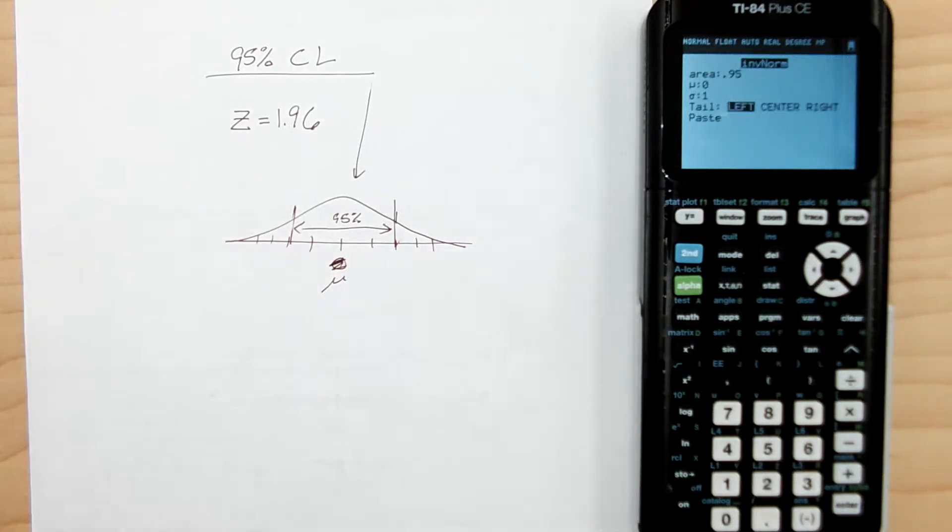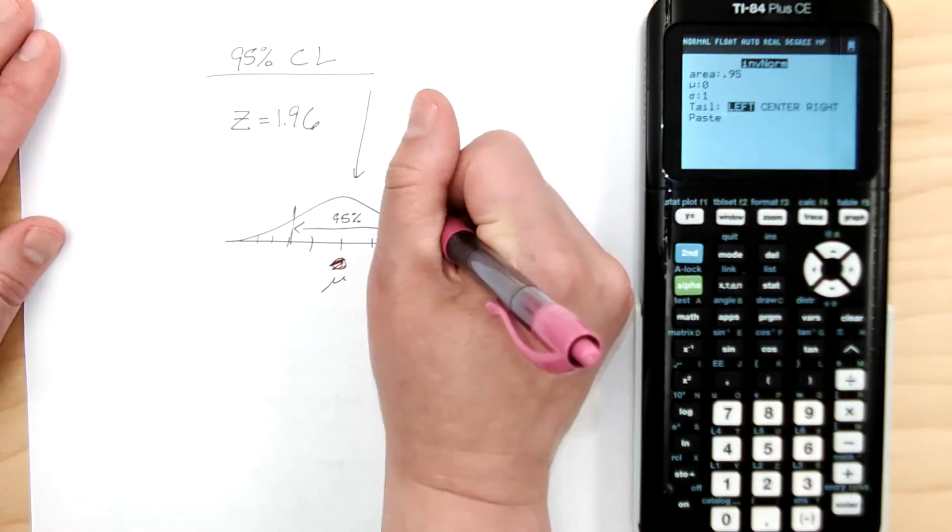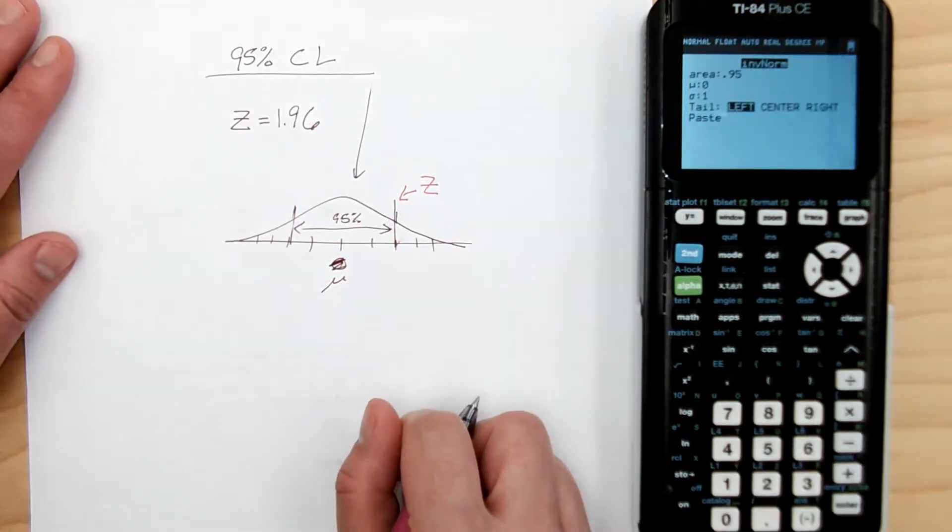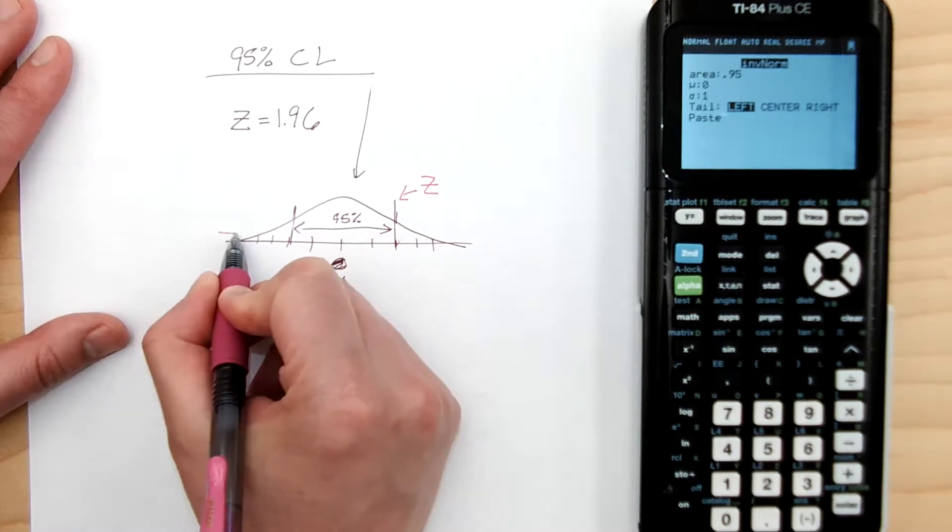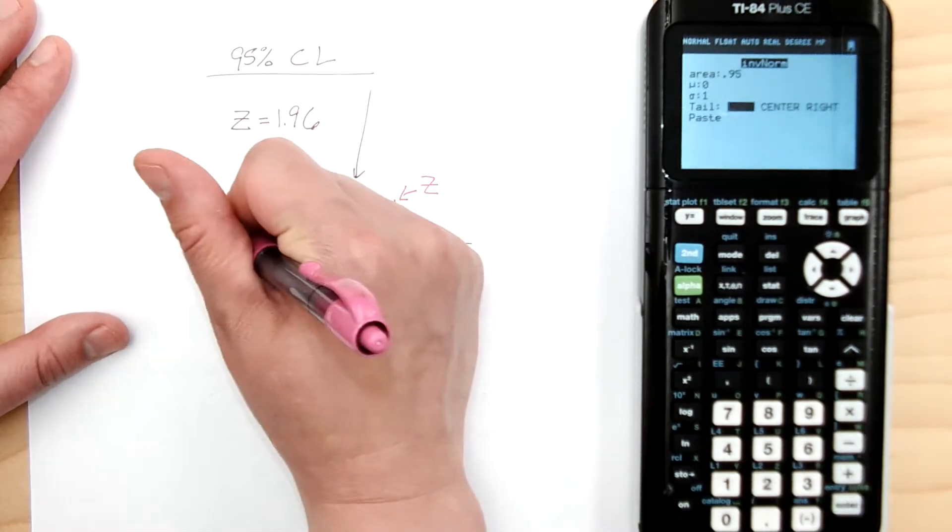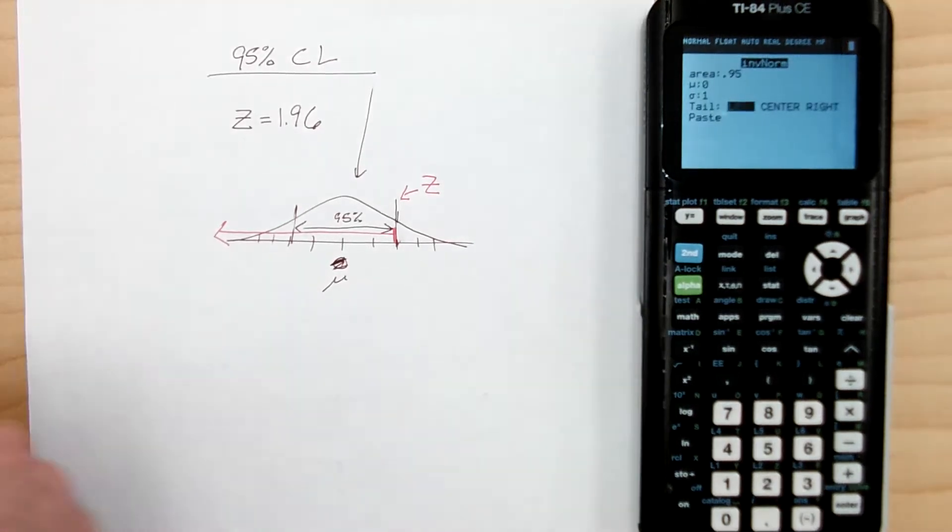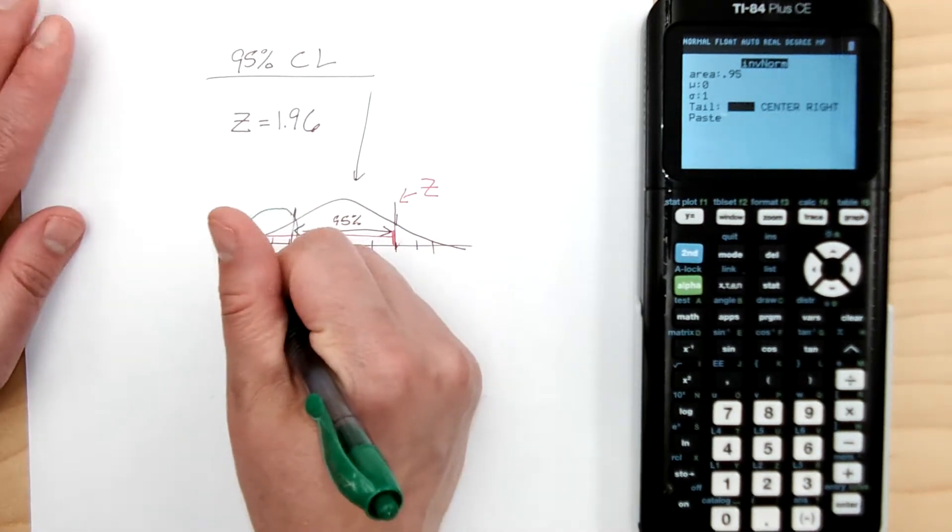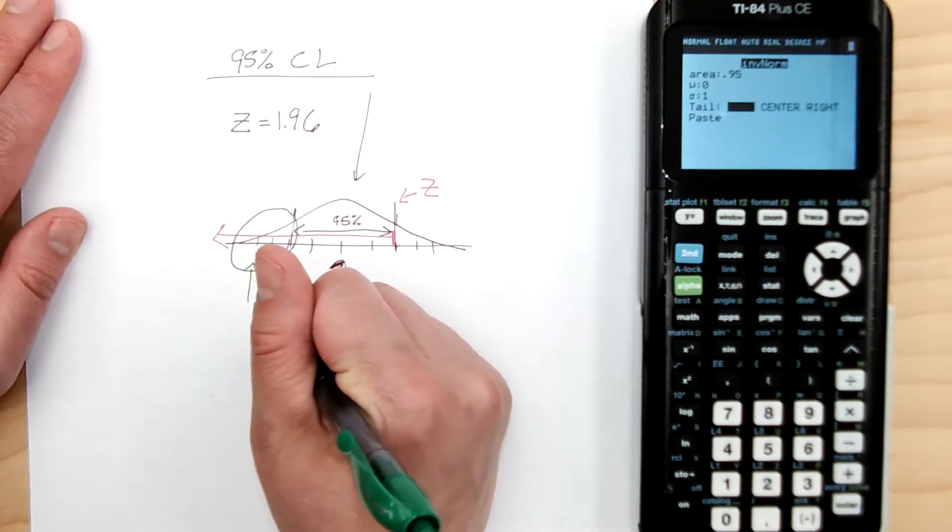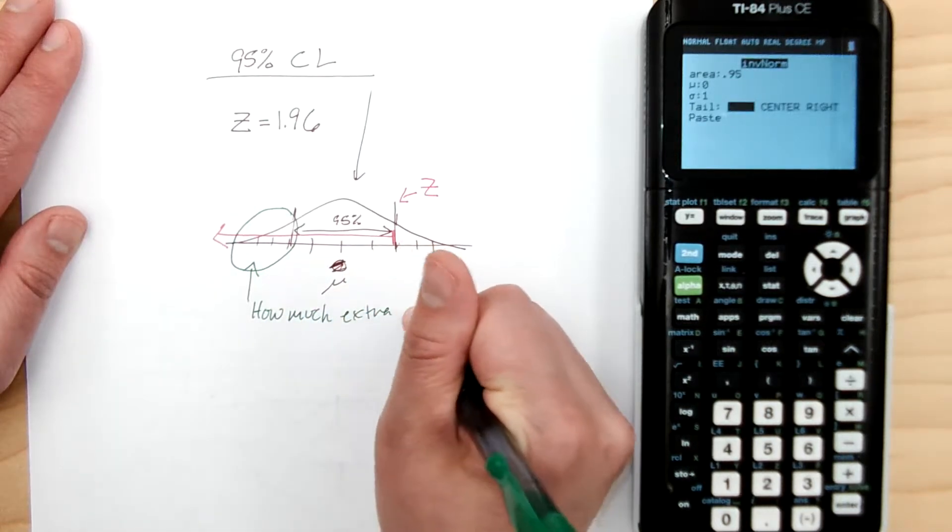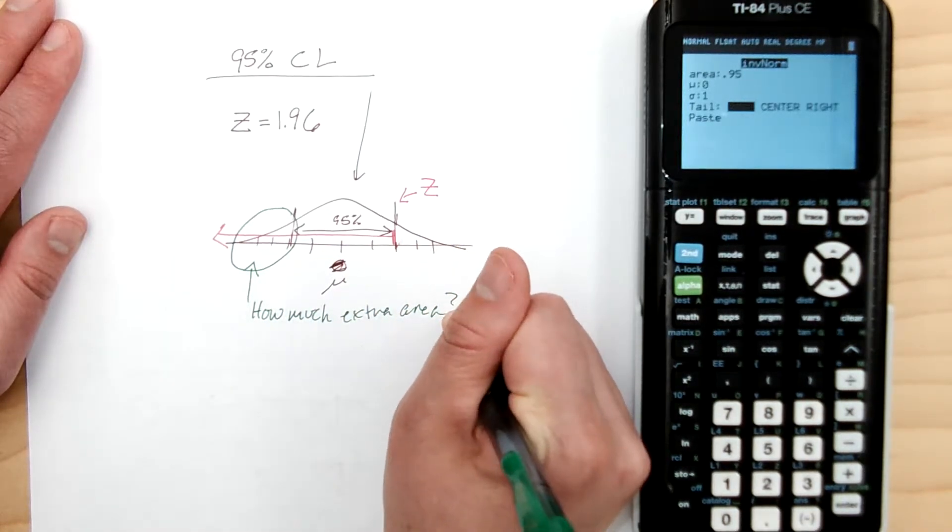then if I'm looking for this one, if I'm looking for the positive Z score, then I need to consider not the 95%, but the entire area this way. So the question becomes, how much area do I need to add on? How much extra area?